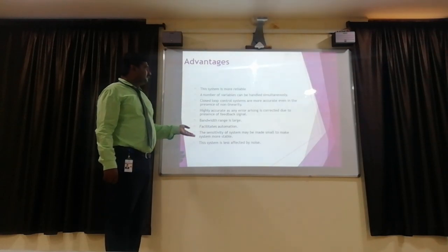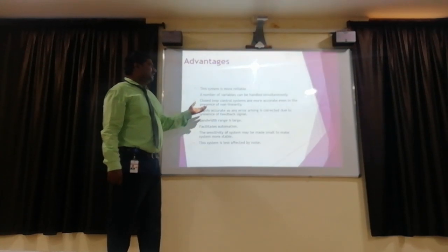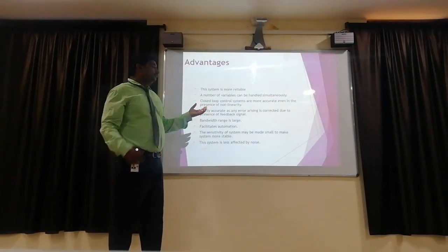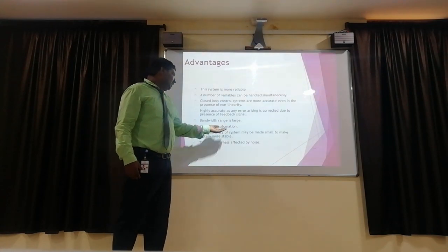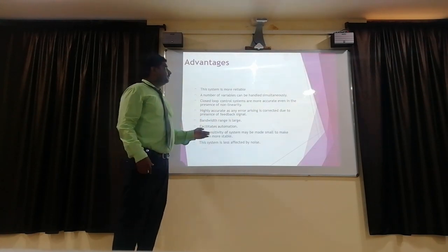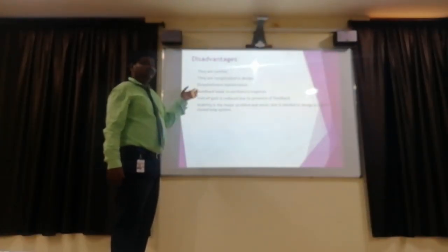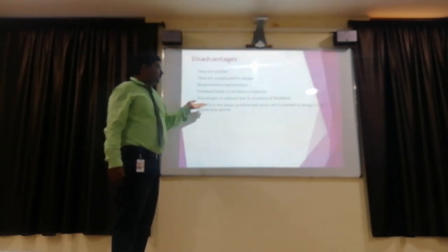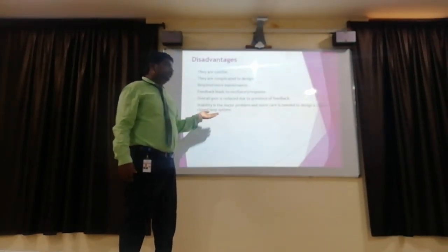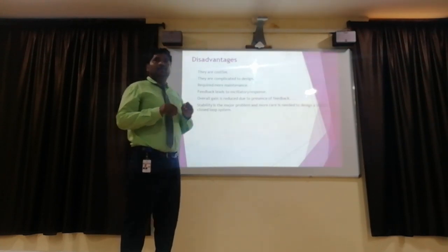Advantages of the closed loop control system: the system is more reliable and handles inputs automatically. The closed loop system is more accurate than the open loop system. It facilitates automation and is less affected by noise. Disadvantages: it is costly, complicated in design, requires more maintenance, feedback needs to be accessed carefully, and stabilizing can be a major problem. These are the disadvantages of the closed loop control system.